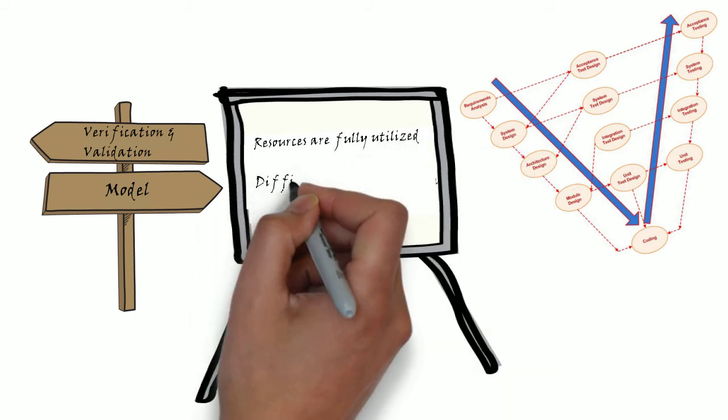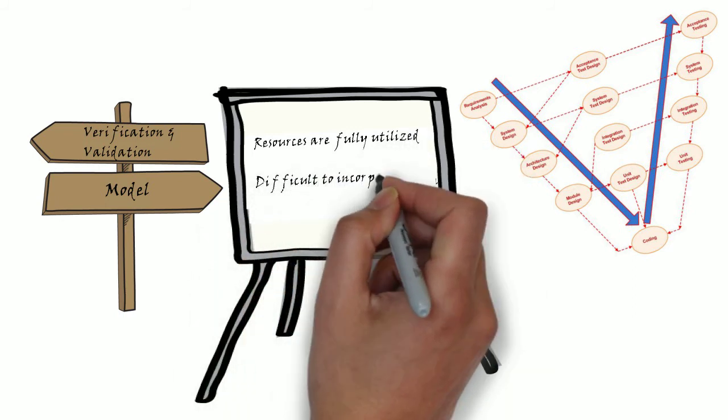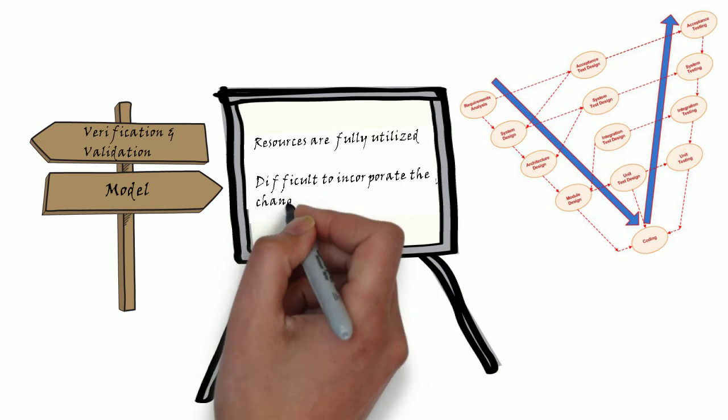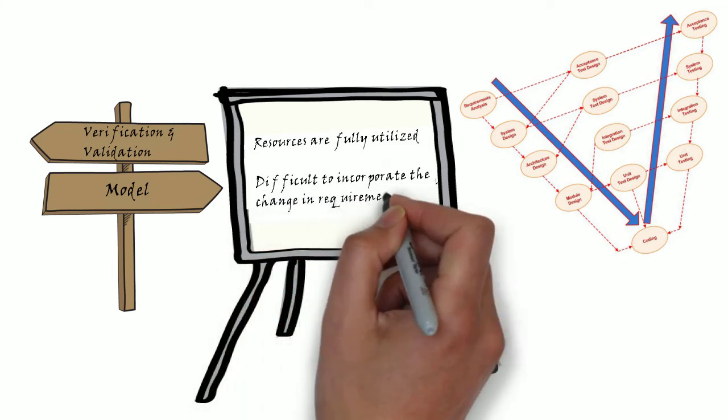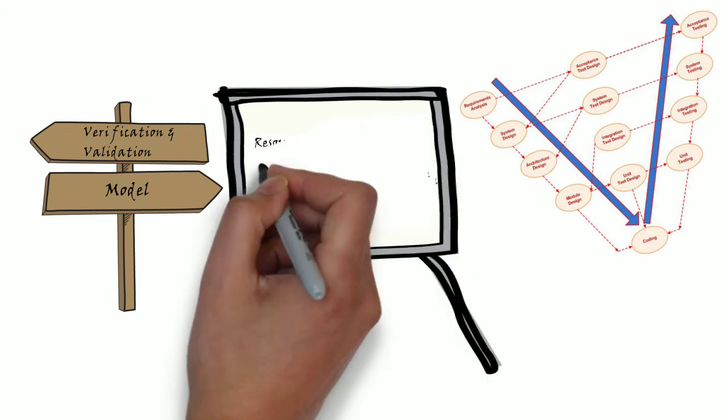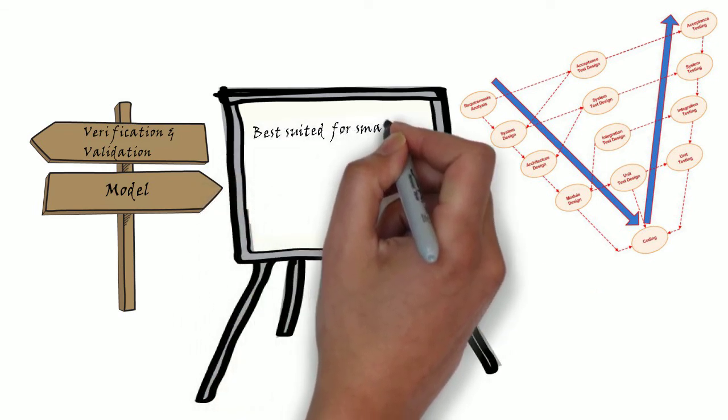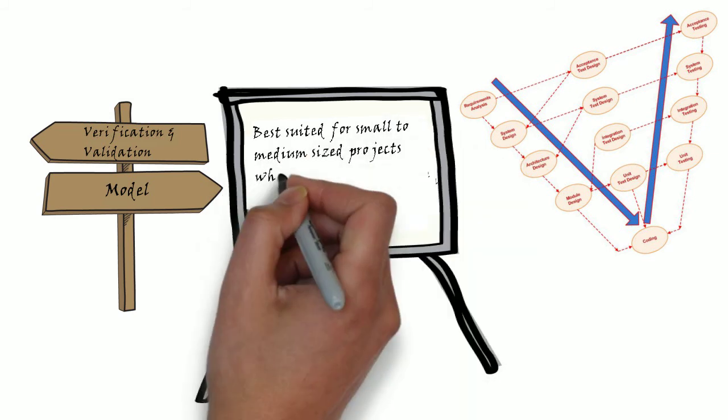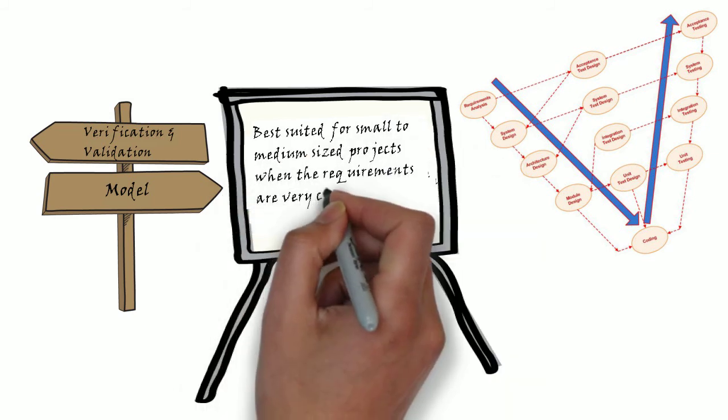The main disadvantage is, as customers are not given any prototypes, they may come back and ask for a change at a later point of time which would be difficult. Or if any change happens in the midway, test documents and requirement documents need to be updated and that could be incorporated in the code as well which may be difficult. This model is suited for small to medium size projects where requirements are very clear and if the project wants to fully utilize the resources.